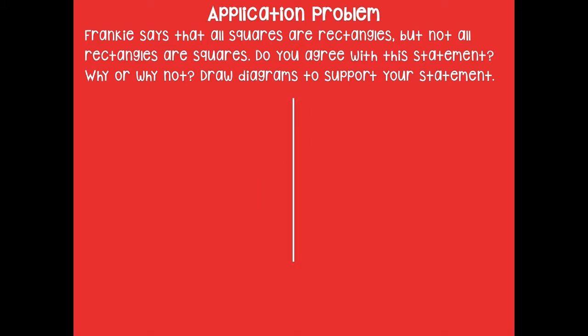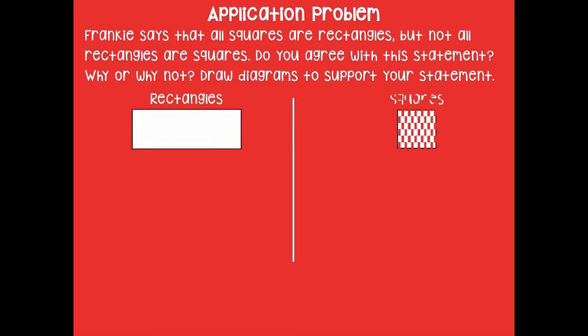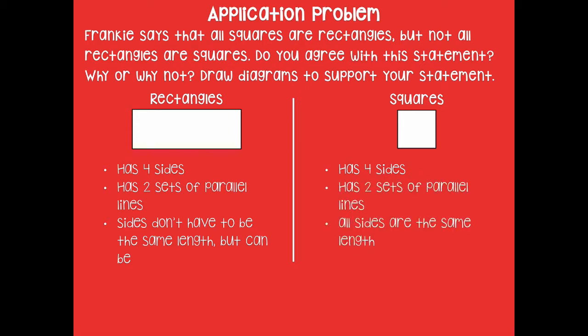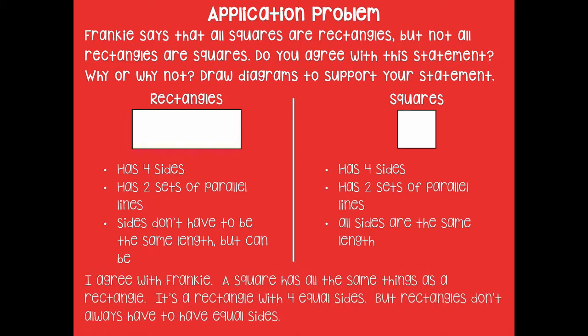Here's what I came up with. I separated my screen — rectangles over here and squares here. Rectangles have four sides, two sets of parallel lines, and the sides don't have to be the same length but can be. Squares have four sides, two sets of parallel lines, and all sides are the same length. I agree with Frankie — a square has all the same things as a rectangle. It's a rectangle with four equal sides, but rectangles don't always have to have all equal sides. So all squares are rectangles, but not all rectangles are squares.